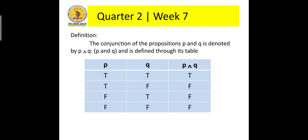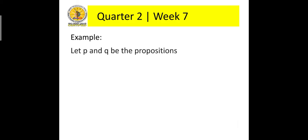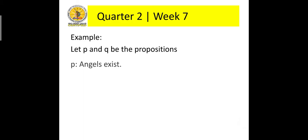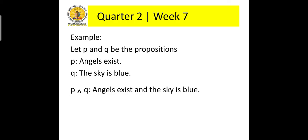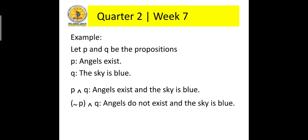The conjunction of propositions P and Q is denoted by P and Q, and is defined through its truth table, as shown below. The propositions P and Q are called conjuncts. For example, let P and Q be the propositions. P and Q: 'Angels exist and the sky is blue.' Not P and Q: 'Angels do not exist and the sky is blue.'